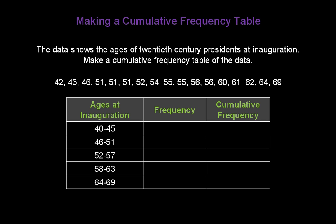Now, let's start counting how many presidents were inaugurated between the ages of 40 and 45. And I've circled them in the chart up above. It turns out there are just 2, so our frequency is 2. What's our cumulative frequency? Well, we've only counted 2 of them, so our cumulative frequency has to be 2 as well.